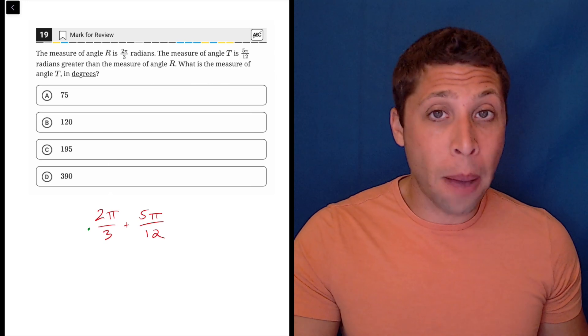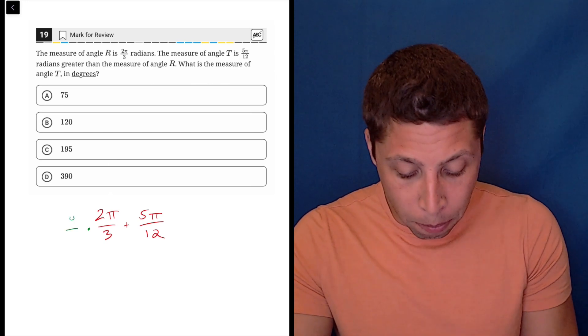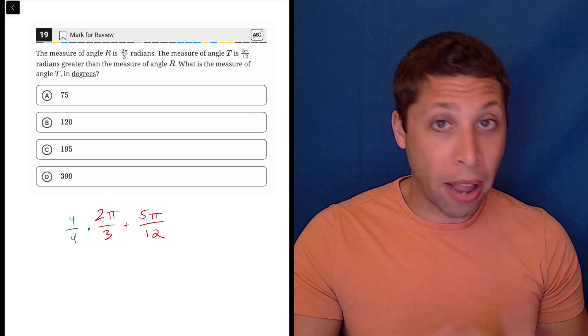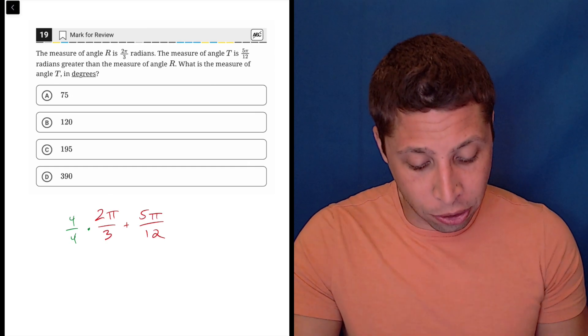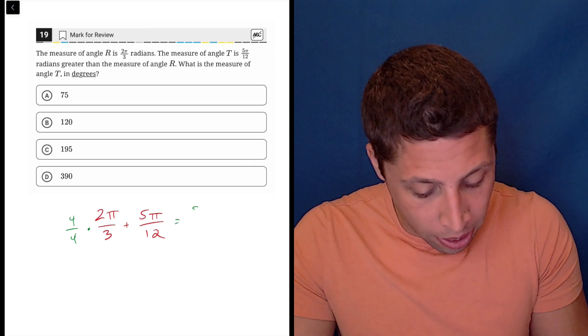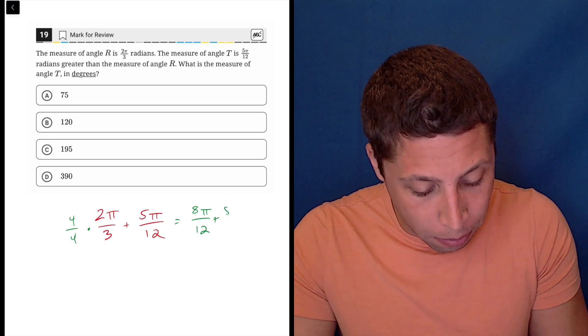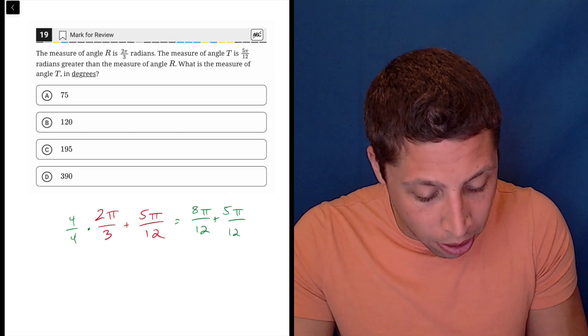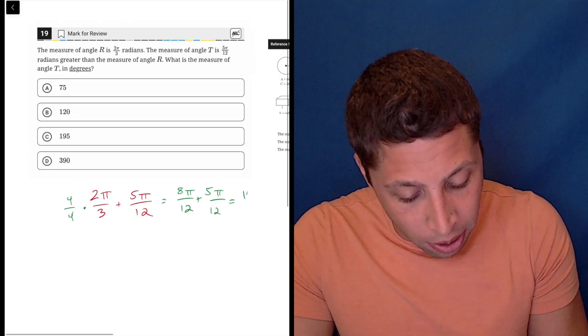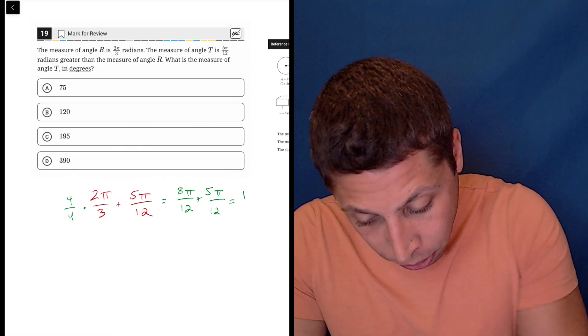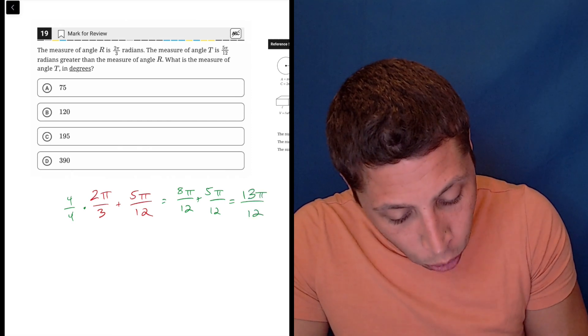So the common denominator here would be 12, so we're going to multiply the first one by 4/4 to change it. So this is really going to become 8π/12 + 5π/12, which is 13π/12.